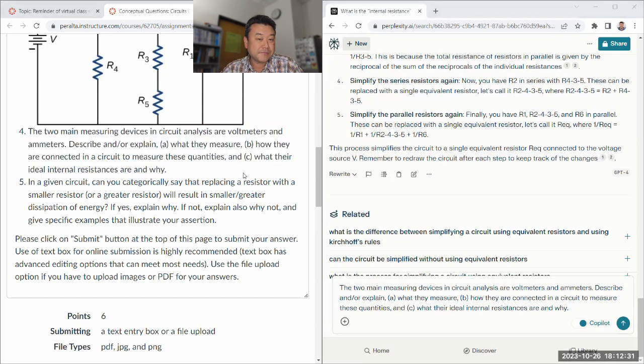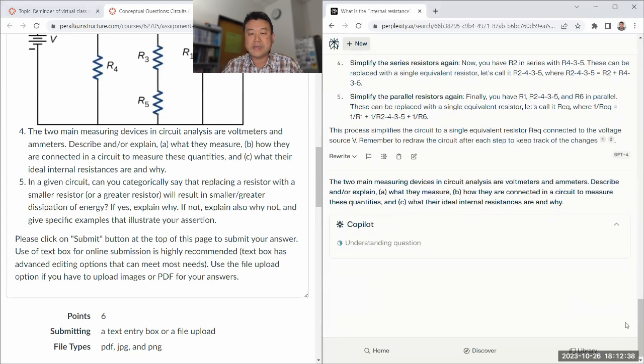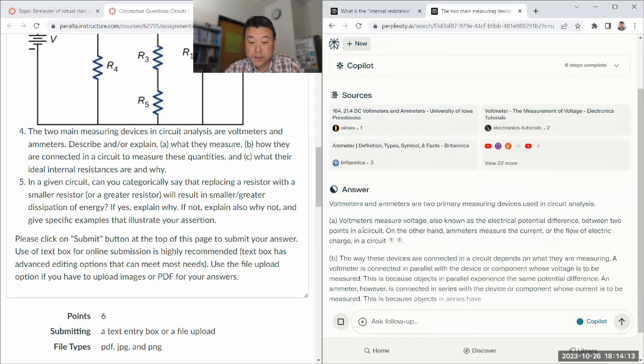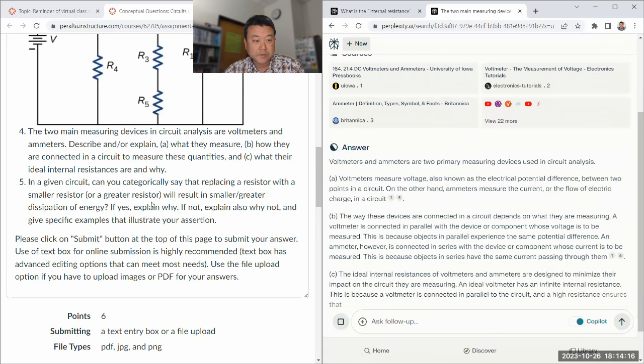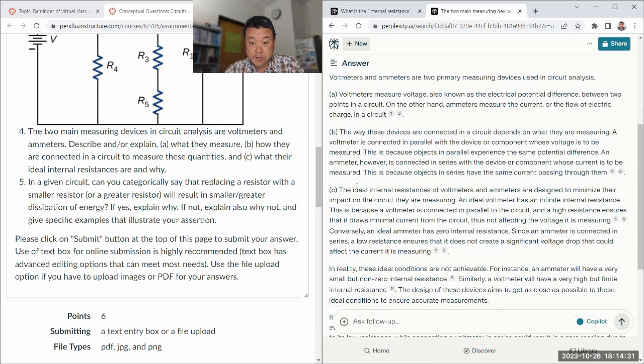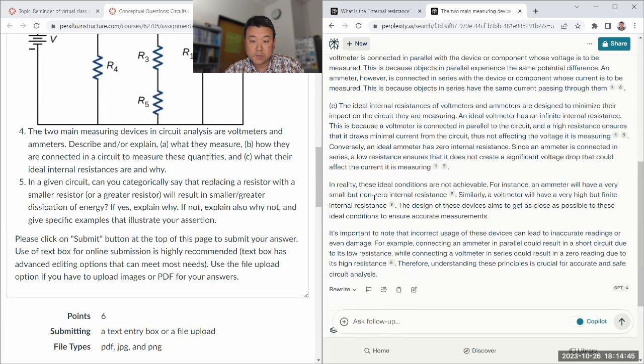Yeah, I think I briefly mentioned this in lab, about ideal arm meter and ideal volt meter. It'll probably answer these well. These are kind of standard questions. Oh wait, it got rid of the digital and analog stuff. Okay, B, how they are connected in circuit, or volt meter is connected in parallel. That's right. Arm meter is connected in series, right. So that the current has to go through the arm meter. That's good. Ideal internal resistances are designed to minimize their impact. So volt meter has infinite internal resistance. Okay. Ideal arm meter is zero internal. Yeah, that's all good. Yeah. They're very small, but non-zero. Yeah.